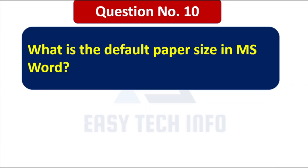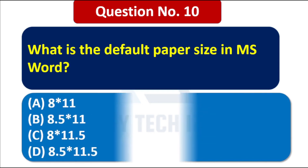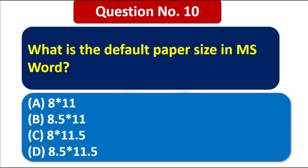Question number 10: What is the default paper size in MS Word? The correct answer is option B, 8.5 × 11.